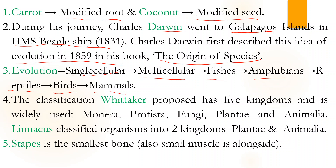For classification of organisms, the five-kingdom system is still used today: Monera, Protista, Fungi, Plantae, and Animalia. An important point is that Linnaeus classified organisms into two kingdoms — Plantae and Animalia. Linnaeus also gave binomial nomenclature; for example, apple is Malus domestica, where Malus is the generic name and domestica is the specific or species name.